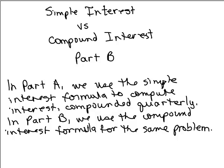In Part A, we used the Simple Interest Formula to compute interest on an account that is compounded quarterly. This takes four different computations. Now in Part B, we're going to use a formula called the Compound Interest Formula to compute the interest on the same problem. So make sure you view Part A first.